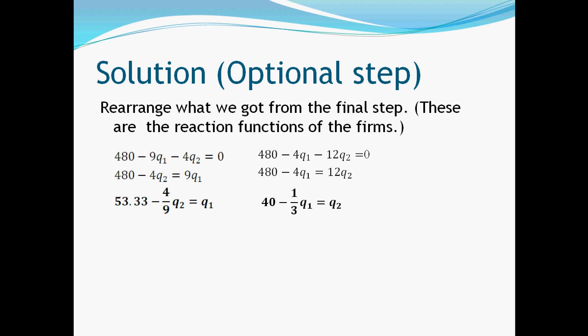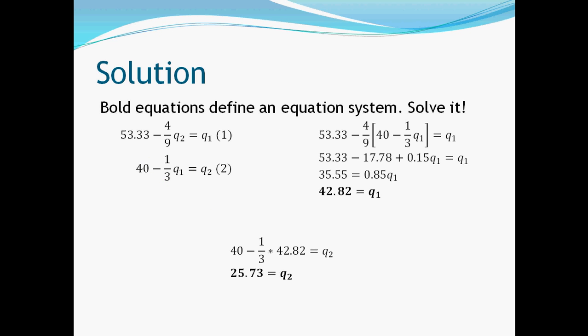Optionally, or if the task asks for it, rearrangement can be done in another way — to have q1 and q2 on the right side of our equations. These functions show the production of firm number one as a dependent of the production of the second one. So these are the so-called reaction functions we have been talking about earlier in this section. We can also see that those equations determine an equation system, which has to be solved in order to get the production of the two firms. After that, it is really easy to tell the total production of the market — just sum up the individual quantities.